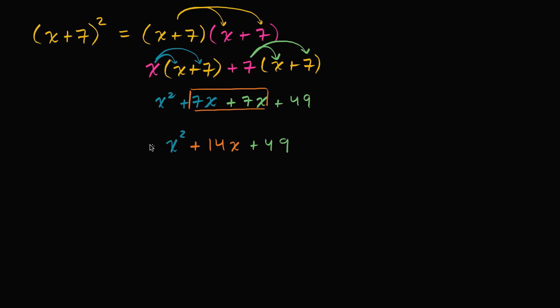Now the key question is, do we see some patterns that we can generalize to help us square binomials faster in the future? When we looked at multiplying binomials, we saw that (x + a)(x + b) = x² + (a + b)x + b².